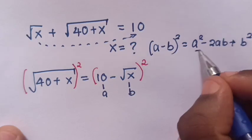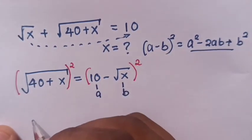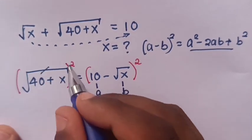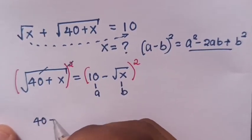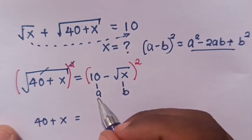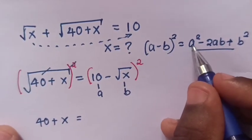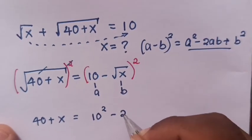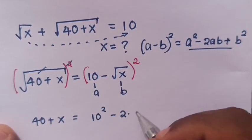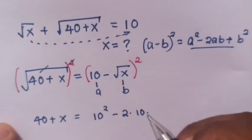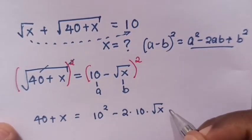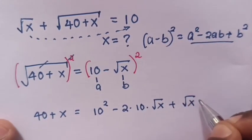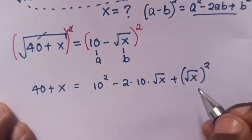We will apply this rule to the right side. Then, square root will cancel with the square. So our equation will be 40 plus x equals 10 squared minus 2 times 10 times square root of x plus square root of x squared.